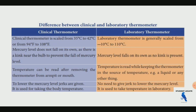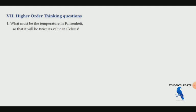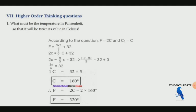Higher order thinking: What is the temperature in Fahrenheit such that it will be twice the value of Celsius? So if F equals 2C, using the formula F = (9/5)C + 32, substituting F = 2C gives 2C = (9/5)C + 32, solving gives C = 160 degrees Celsius.